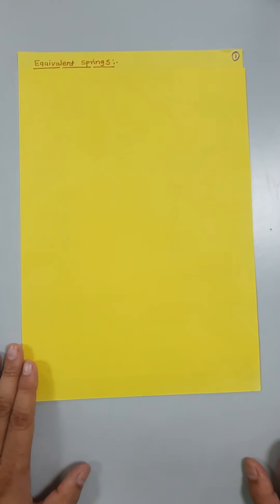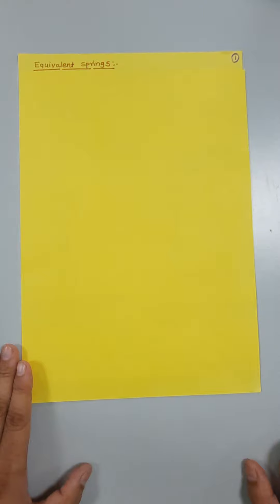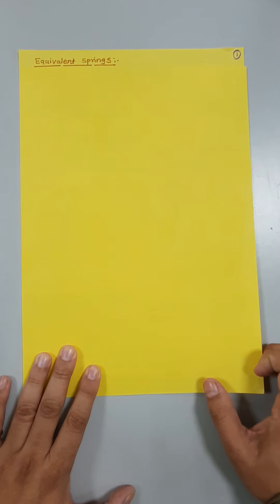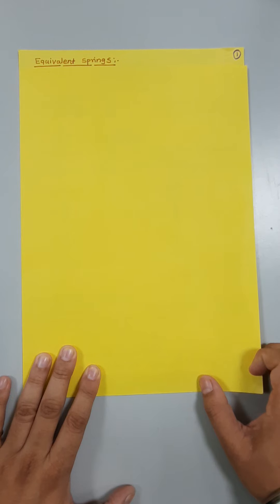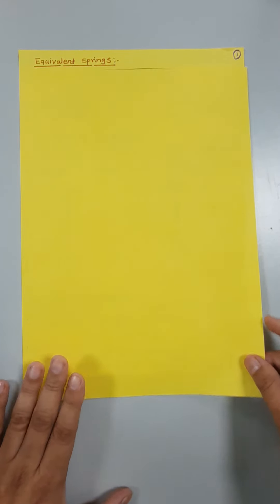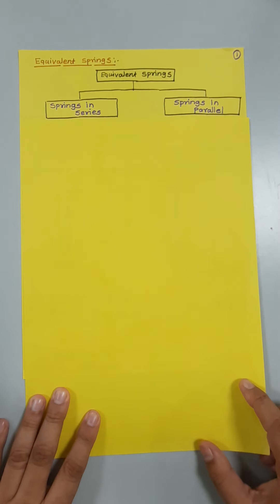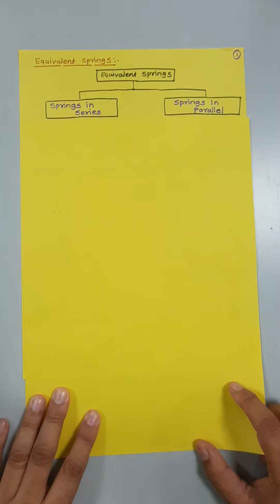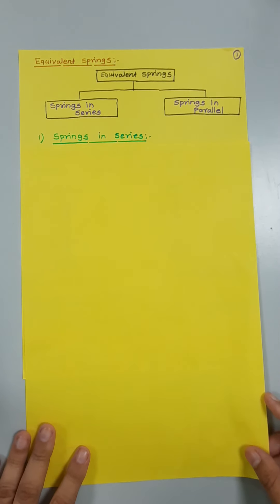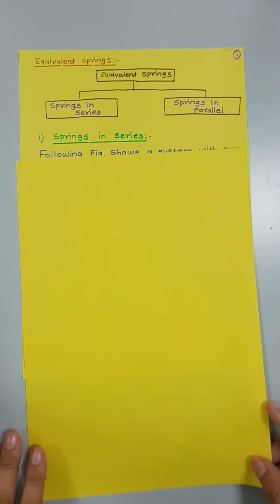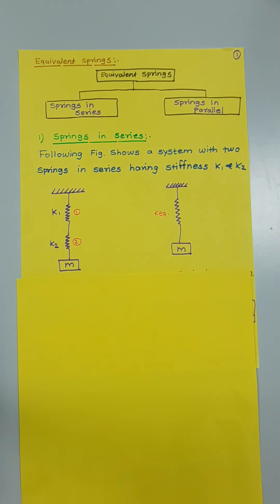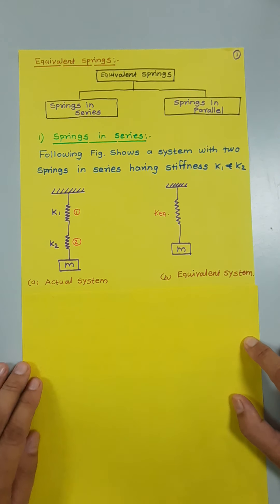Good morning friends. Today we are going to learn equivalent springs. In many practical applications, more than one spring may be used. To convert such a system into an equivalent mathematical model, it is necessary to replace the springs in the system by one equivalent spring. Equivalent springs are classified as springs in series and springs in parallel.